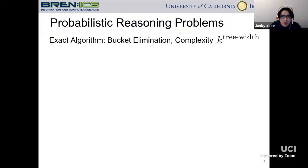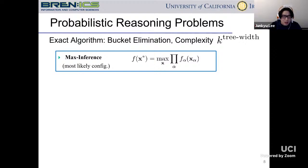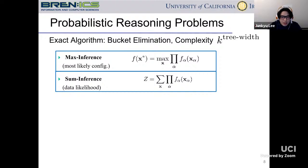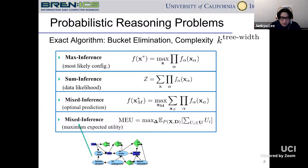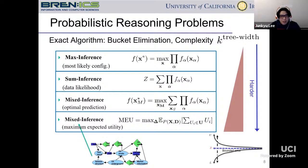Let me overview the probability reasoning problems or inference tasks in graphical models. One common task is max inference for MPE, finding the mode of the joint function. The next is sum inference — computing the partition function, performing numerical integration on the joint function. Mixed inference combines both maximization and summation into a single task. Lastly, we have the MEU task — computing the maximum expected utility — which involves both probability and utility functions. All these inference tasks are difficult, but the difficulty increases as we go down the list. MEU is recognized as one of the most difficult inference tasks in graphical models, which is why we are often interested in computing upper and lower bounds.